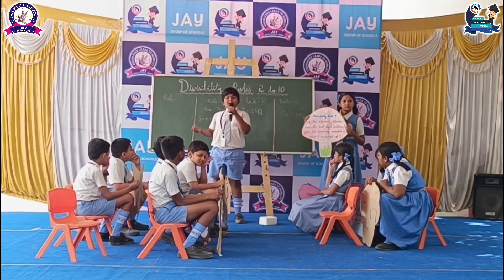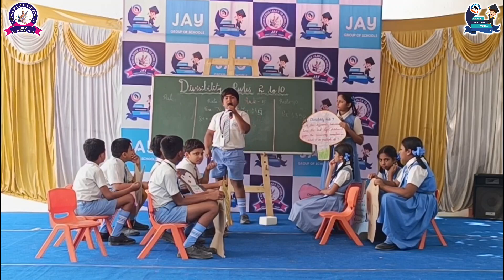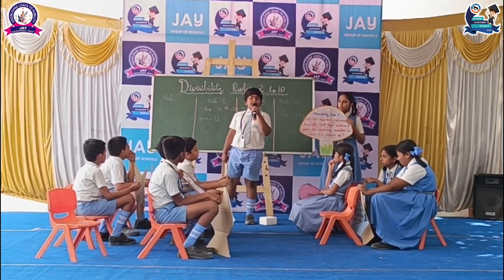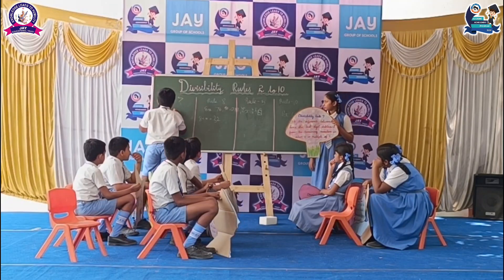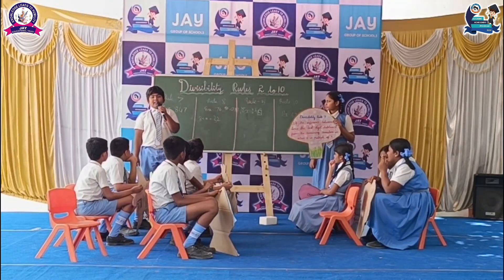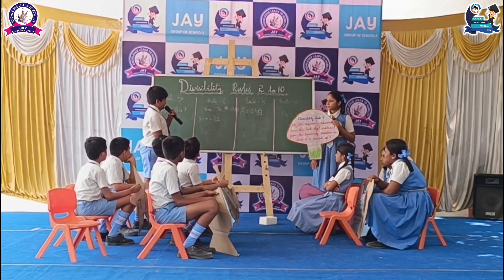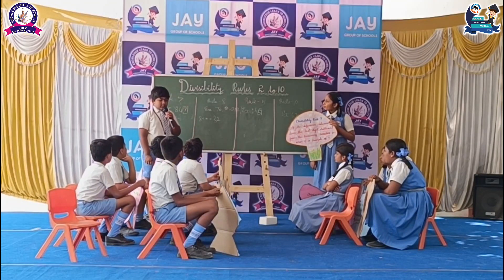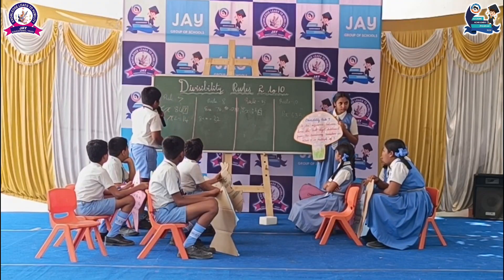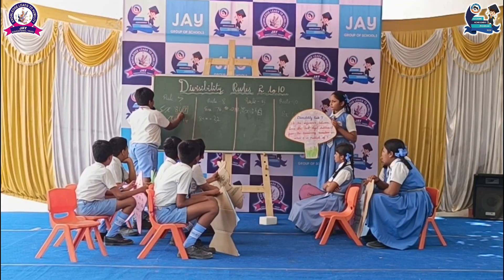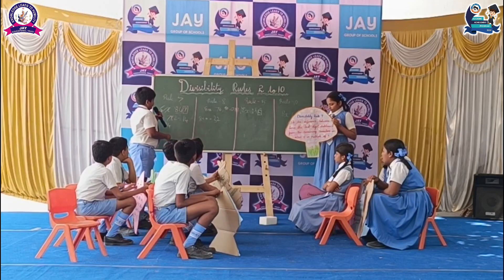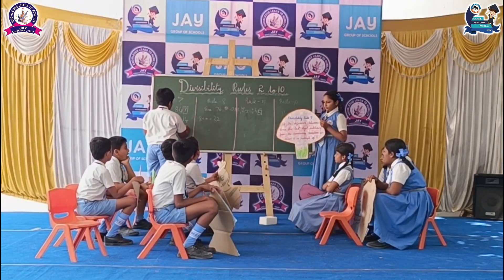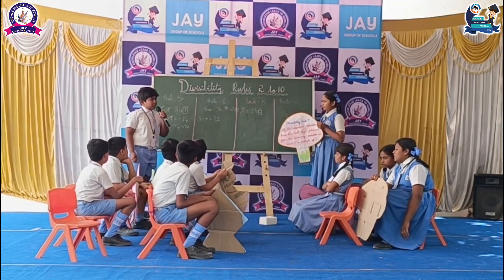Myself is Anand. I am going to share the divisibility rule for table 7. If the difference between twice the last digit and the number formed by the remaining digits is either zero or a multiple of 7, then the number is divisible by 7. For example, 847 — the last digit is 7. Twice 7 is 14. The number formed by the rest of the digits is 84. The difference between 84 and 14 is 70. Seventy is a multiple of 7. So the given number 847 is also divisible by 7.